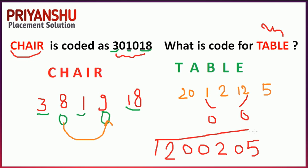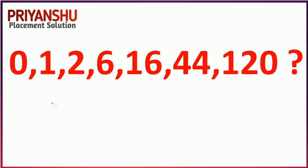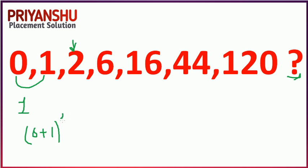The answer 2-0-0-2-0-5 is 100% among your options. Moving to the next question — a number series where you need to find the next number. The logic: 0+1=1, ×2=2; then 1+2=3, ×2=6; then 2+6=8, ×2=16.